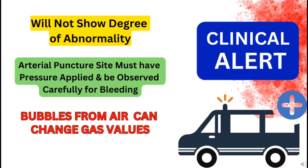Very important points to consider during arterial blood sample collection: first, a typical blood gas analysis cannot diagnose any specific disease — you must correlate the report with clinical symptoms. Second, the arterial puncture site must have pressure applied and be observed carefully for bleeding. Because arteries have high pressure, clot formation takes more time than with venipuncture, so you must carefully observe for bleeding and apply pressure on the arterial surface to stop it.